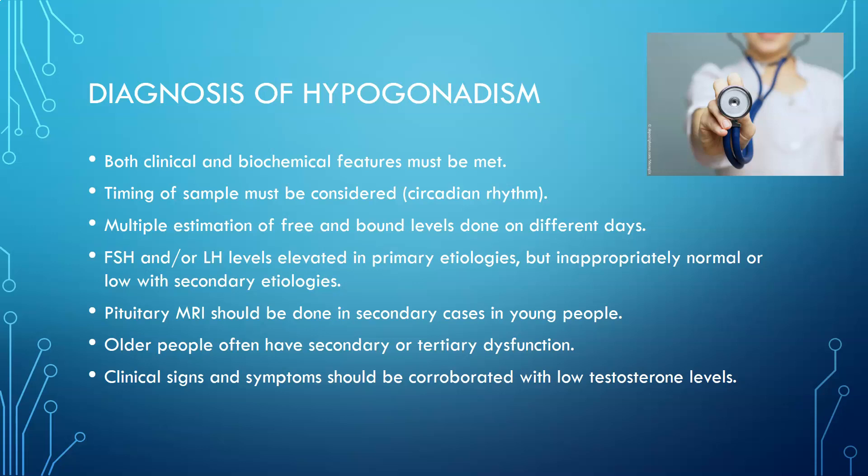A pituitary MRI should be done in secondary cases in young people. If you see normal or low FSH or LH, investigate the pituitary. Older people often have secondary or tertiary dysfunction, meaning the dysfunction is at the level of the pituitary or hypothalamus. Clinical signs and symptoms should be corroborated with low testosterone levels.